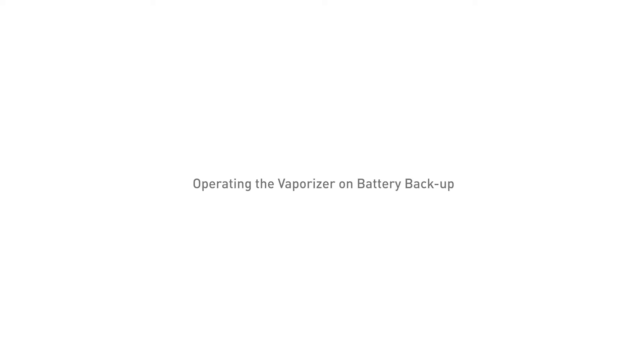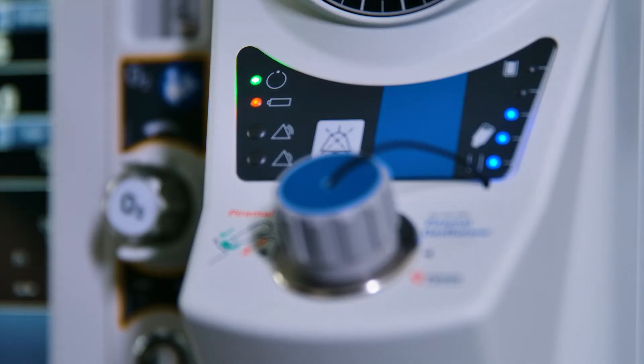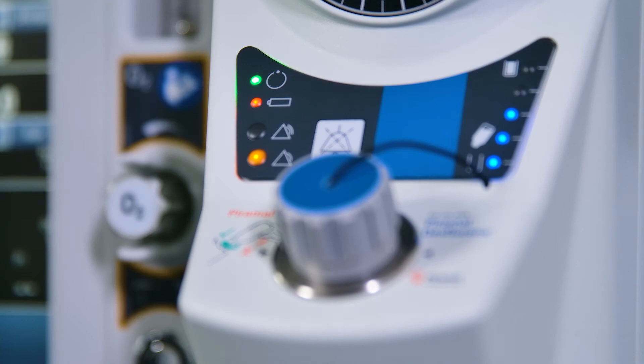Operating the vaporizer on battery backup: If the battery is in a charged state, changeover is instantaneous if the mains power supply fails. The vaporizer remains in operating mode. When the battery is in use, a periodically repeated single audio tone sounds and the indicator will flash.